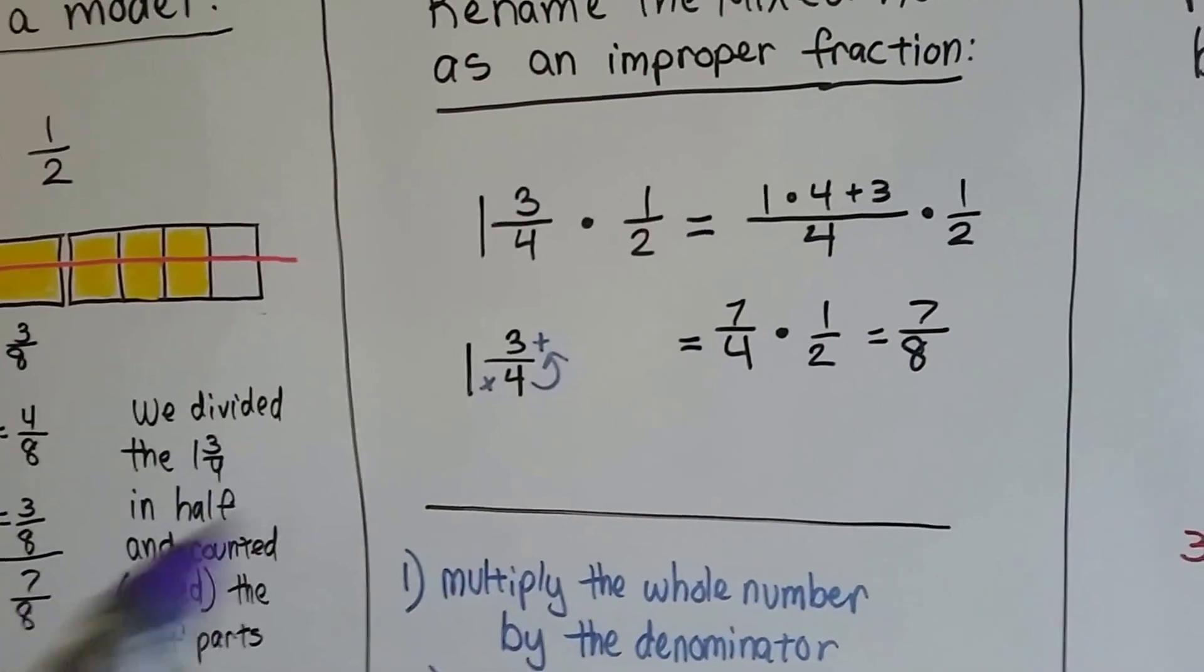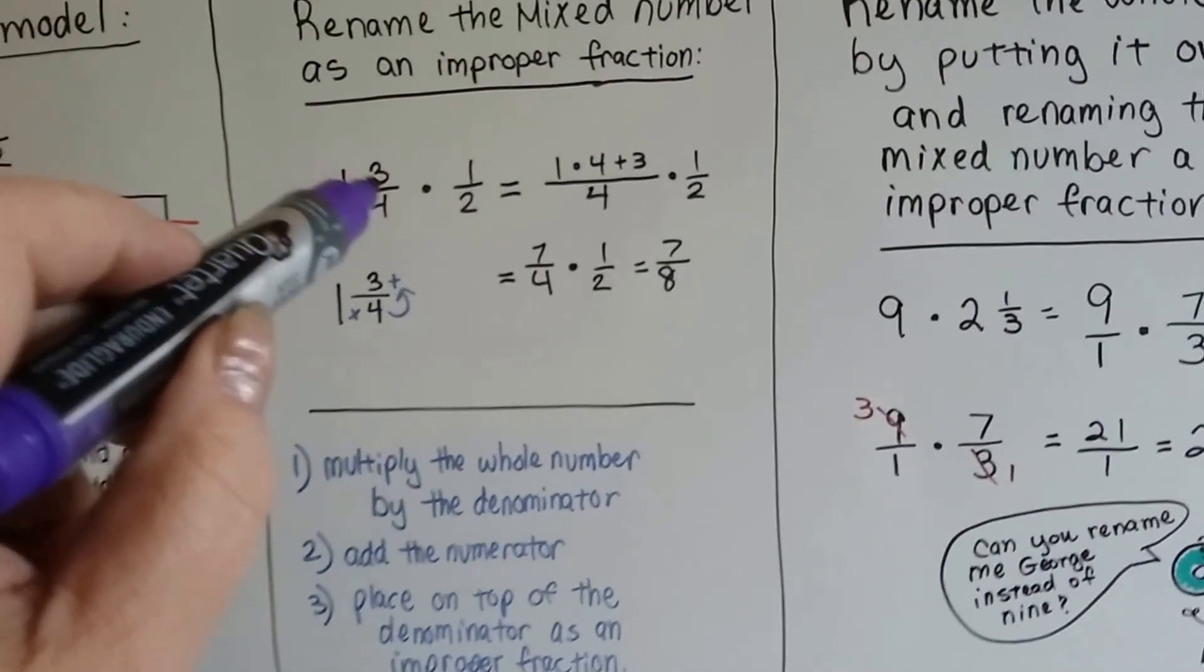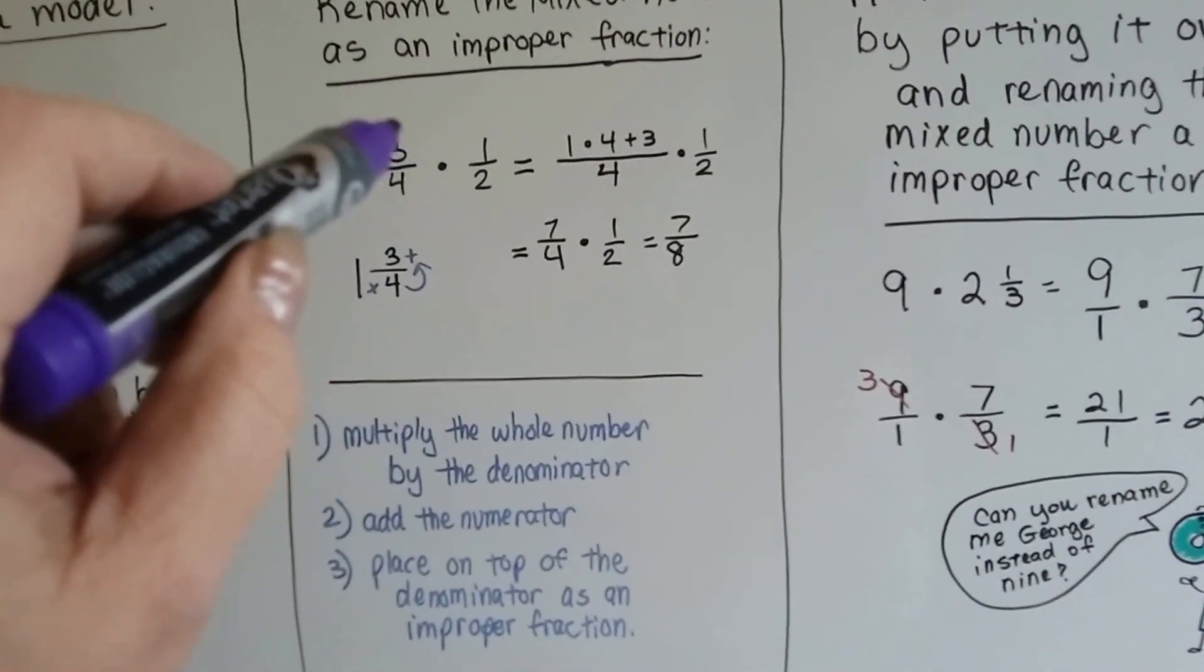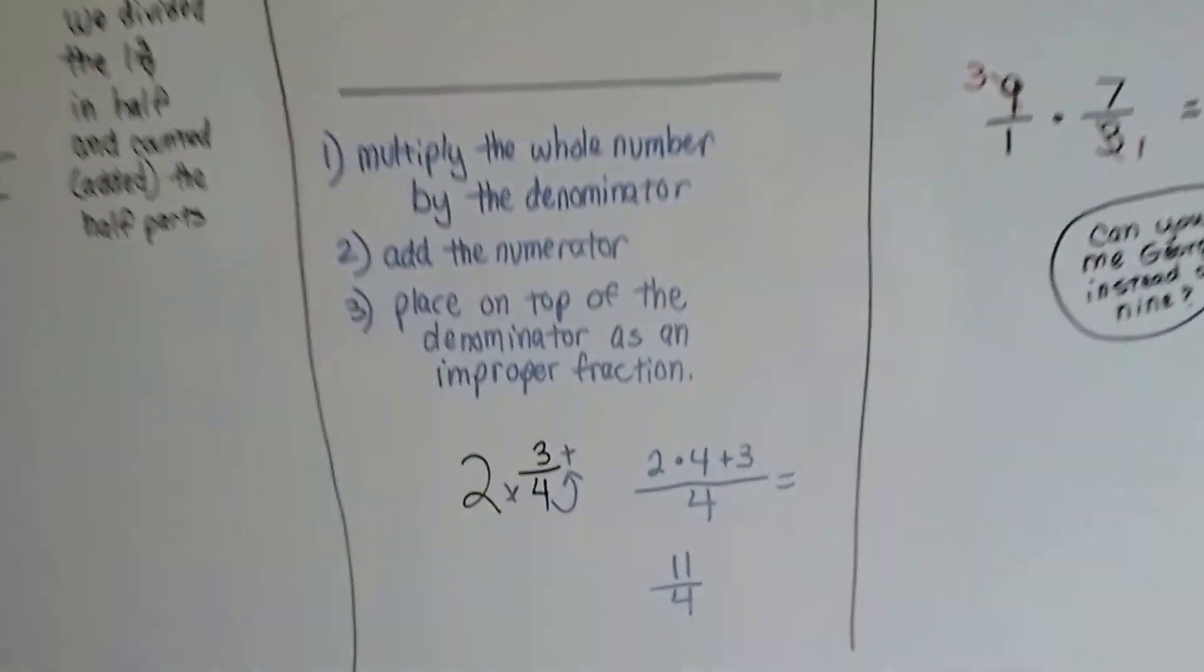See? Just like we did here, 7 eighths. So we multiplied the whole number by the denominator, and we added the numerator, and we placed it on top of the original denominator to make an improper fraction.